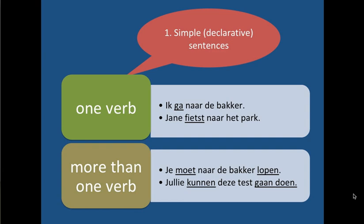If you have more than one verb, you will see that they occur in different places. The first one is in second place: 'Je moet naar de bakker lopen,' 'Jullie kunnen deze tekst gaan doen.' So what you see is that there's a verb in second place — 'je moet' or 'je kan' — and then the other verbs, if there's more than one verb, they will occur at the end of the clause or sentence.